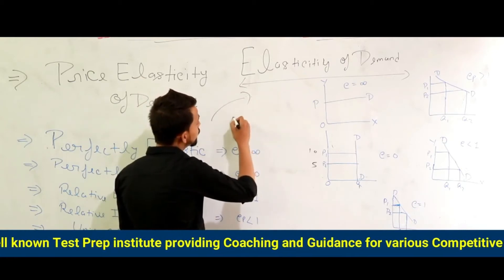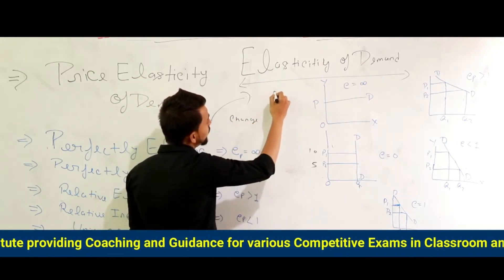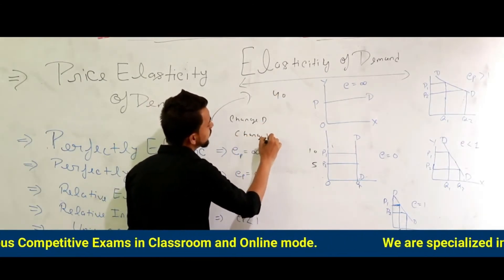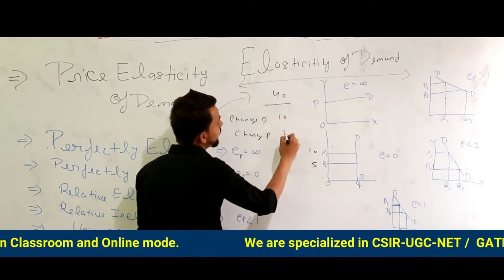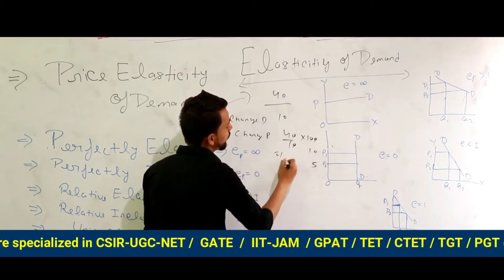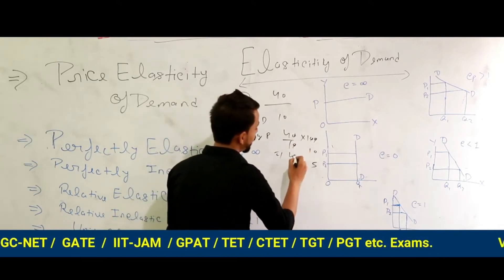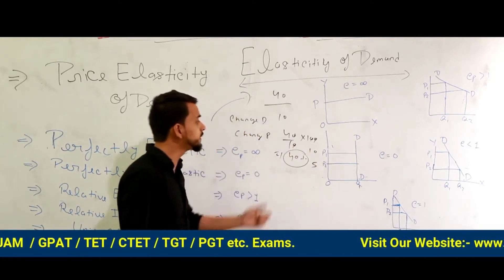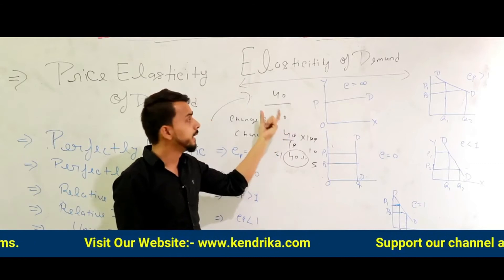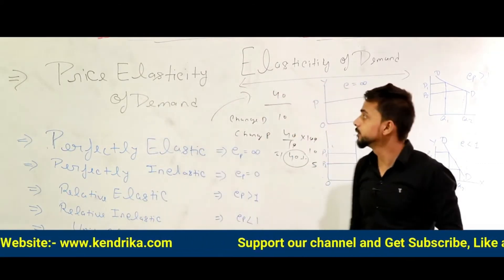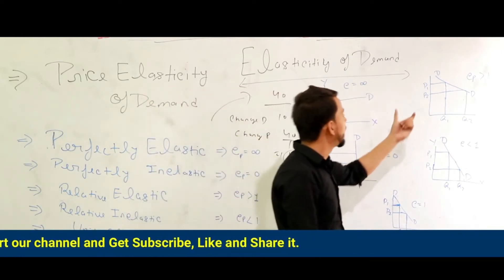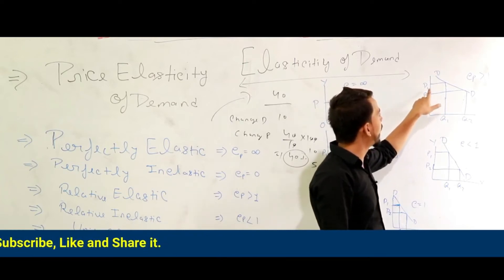For example, if the change in demand is 40 but the change in price is 10, then 10 divided by 40 into 100 gives 40 percent. This means there is a big change in demand but a small change in price — change in demand is more than the change in price. So it is called relatively elastic demand, shown in figure 3.